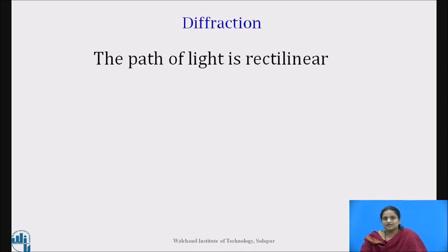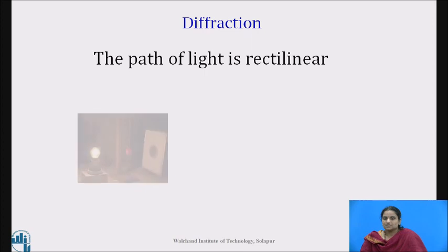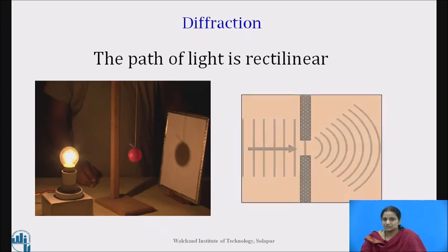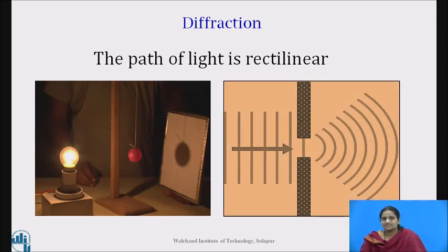Diffraction phenomena demonstrates wave behavior of light. It is a familiar experience that the path of light is rectilinear. We know that if an opaque obstacle is placed in the path of light, a sharp shadow is cast on the screen, representing the rectilinear nature of light. But when the light passes through an aperture, it spreads into the area of geometrical shadow also.